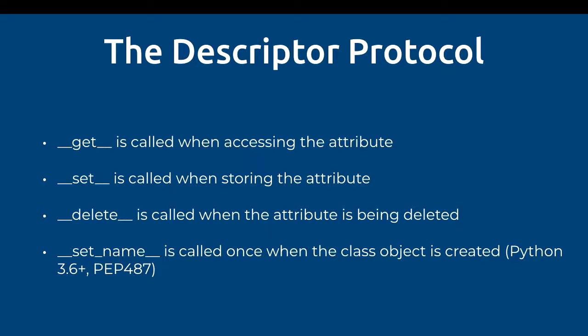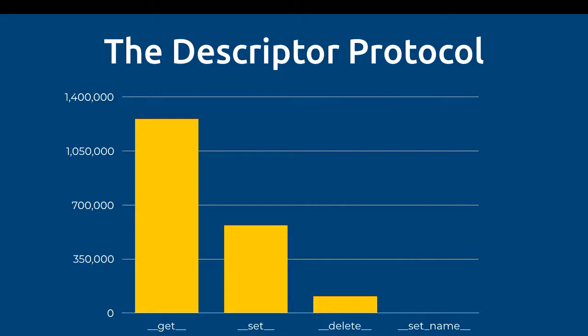If we look at all the public GitHub repositories to see how often these methods are implemented, we can see that __get__ is implemented about 1.2 million times, __set__ is implemented about 600,000 times, __delete__ about 100,000 times, and __set_name__, although minuscule on this chart, is actually implemented about 2,000 times — not surprising because it's only been available since 3.6. While these numbers don't really mean too much, you can imagine that the proportions are quite similar in closed source software.